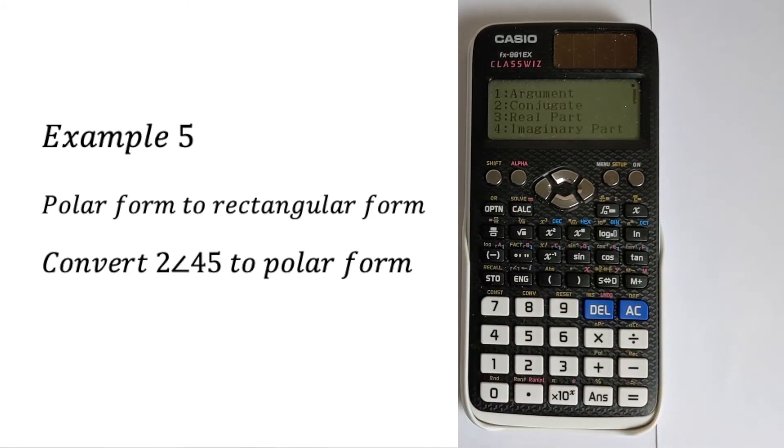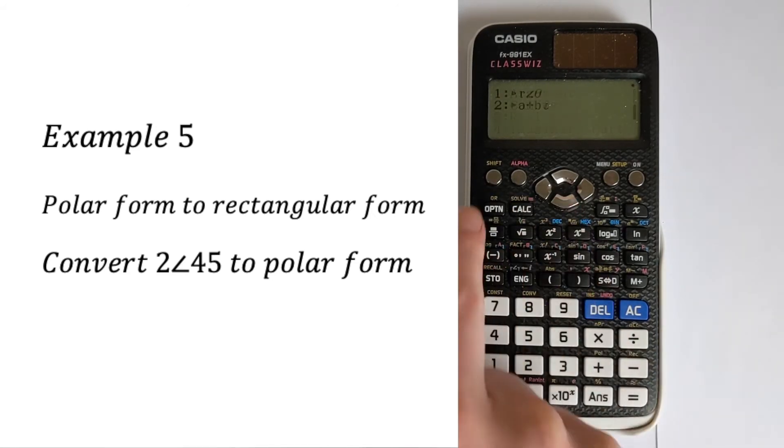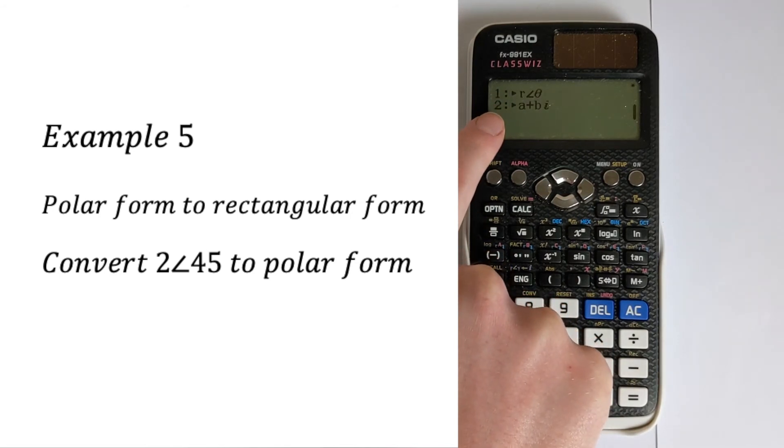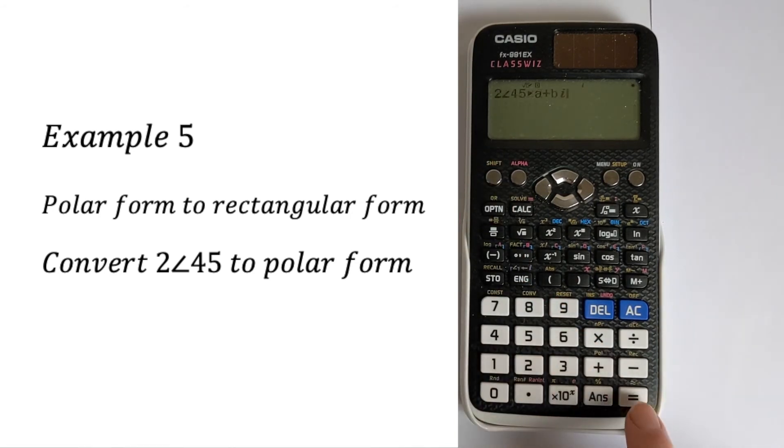Make sure your calculator is in degrees if you're putting in degrees. Then press option and go down. We've got a plus bi—that's rectangular form. Press option 2, then press equals. That will give you the conversion between polar to rectangular form.